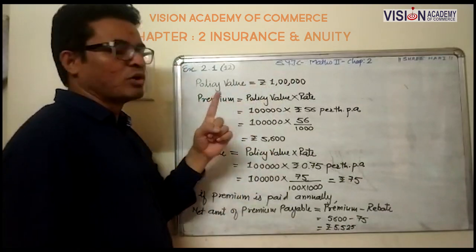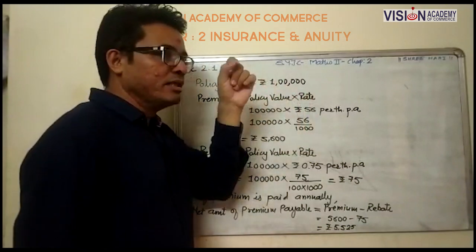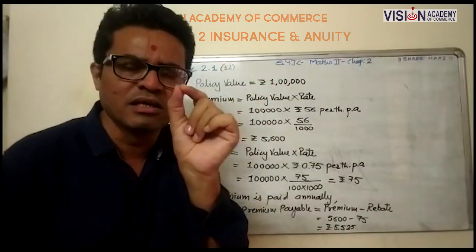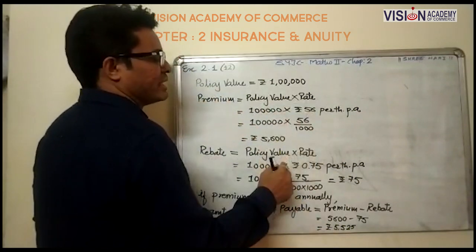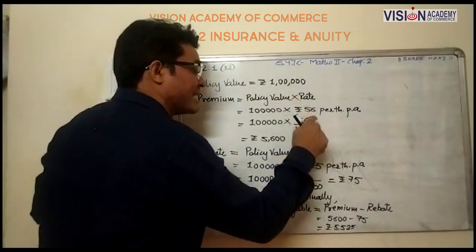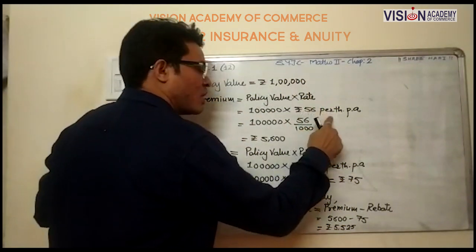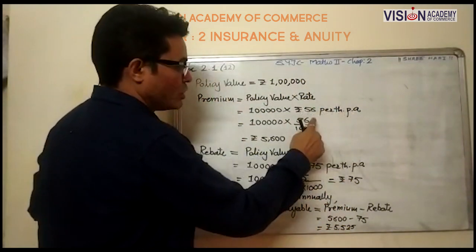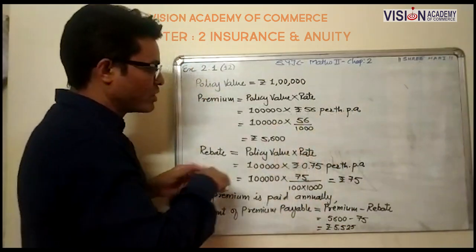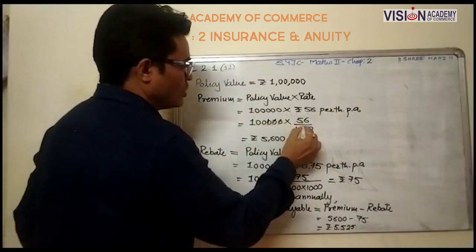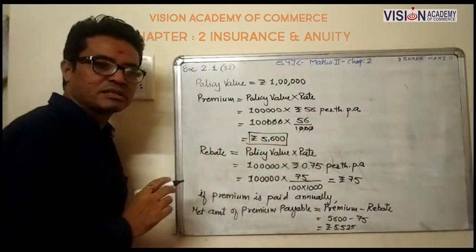In this question, our policy value is rupees 1 lakh. Premium is always calculated on policy value into rate. The rate is given as rupees 56 per thousand per annum. So 1 lakh into 56 per thousand: by cancellation, the premium amount comes to rupees 5,600.